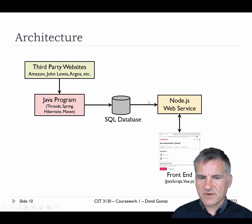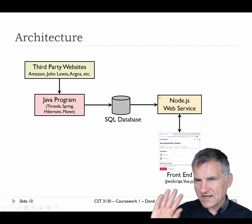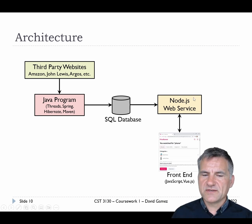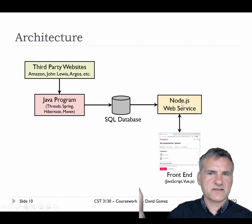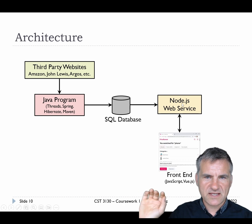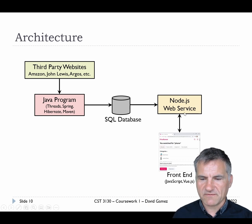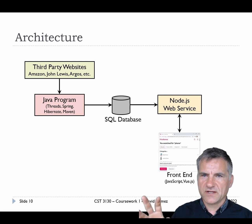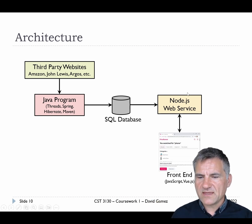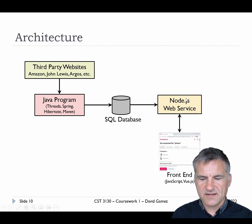So it pulls data from all these separate websites, puts it in the database, and then another completely separate program is exposing that database as a RESTful web service, so you can go to different paths to look at comparison of products or details about the products. Then the front end, using Ajax - like Fetch, or Axios, or whatever - is pinging that web service to get the data and displaying it in the front end. You're welcome to use Vue, React, or any of your favourite frameworks.